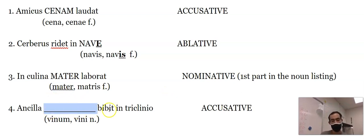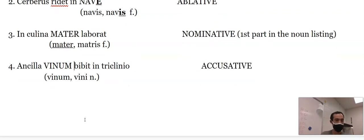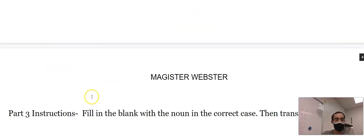Ancilla something bibit in triclinio, accusative. We're going to make 'vinum' the direct object. Vinum is a second declension noun. It's got the 'i' there. We do a great job recognizing declension. So this one, you take out the I and add UM. It stays the same 'vinum.' No change. Ancilla drinks wine in the dining room.